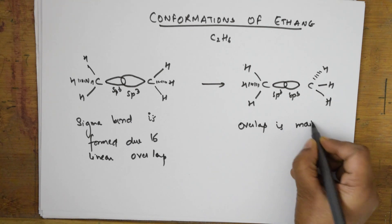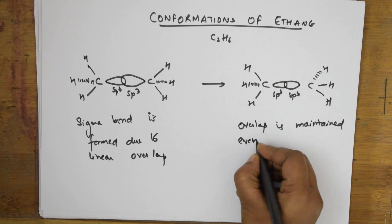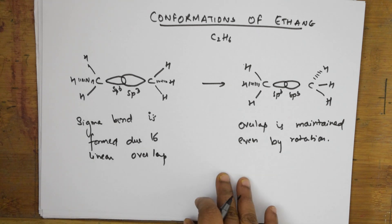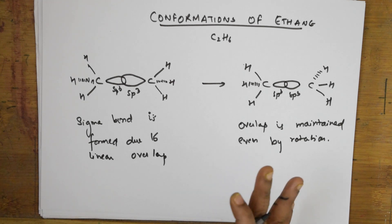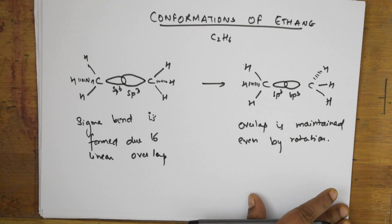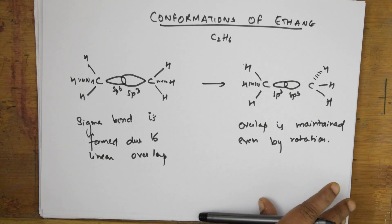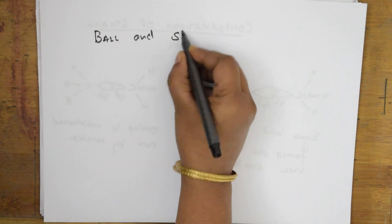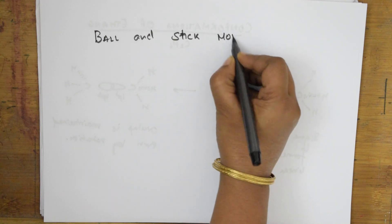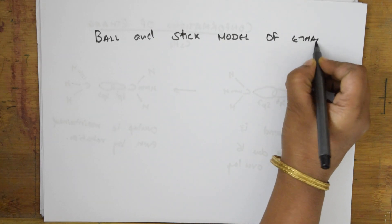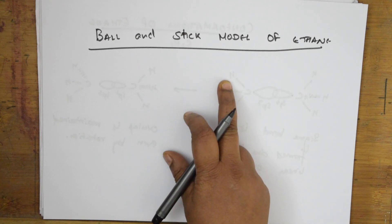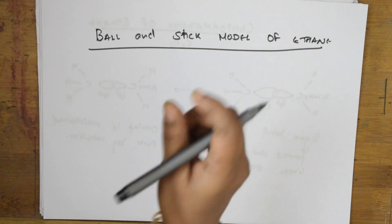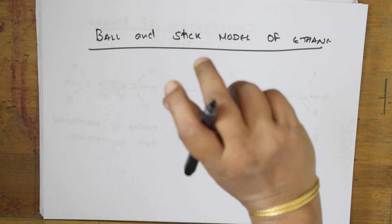After understanding the rotation concept, we know there are certain conformations defined for ethane. The first representation is the ball and stick model of ethane. In this ball and stick model, one carbon atom is kept stationary and the other carbon atom is rotated around the axis — only one is kept fixed.